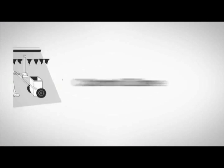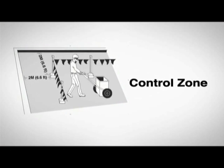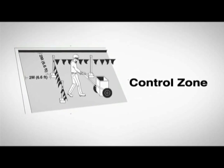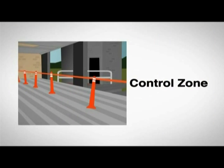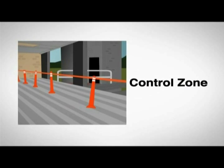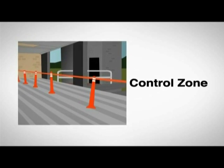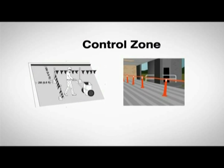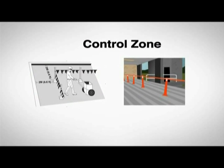A control zone is another method of fall protection for workers within 2 metres of an unguarded edge. The control zone is set out by installing a raised warning line or something equivalent. If any work is being conducted within the control zone itself, a travel restraint or fall arrest system must be used.